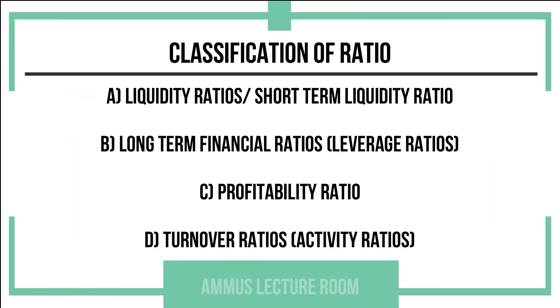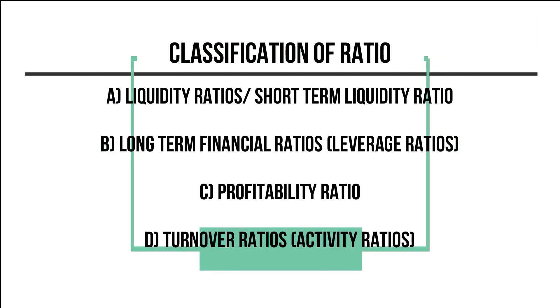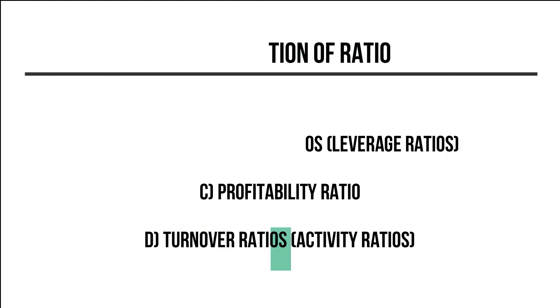The four types of ratios are: liquidity ratios, long-term financial ratios, profitability ratios, and turnover ratios. We will go through each of these in detail.